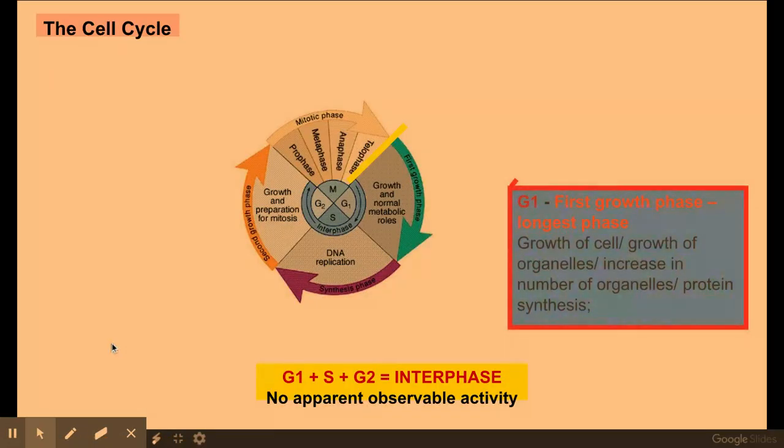So the first one, G1 phase, which you can see here. This is where we get growth of a cell, growth of organelles, increasing number of organelles and protein synthesis. Anything in a red box is taken directly from the mark scheme. It's well worth paying attention to.